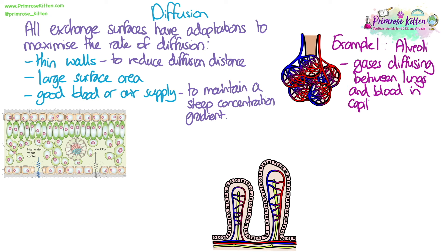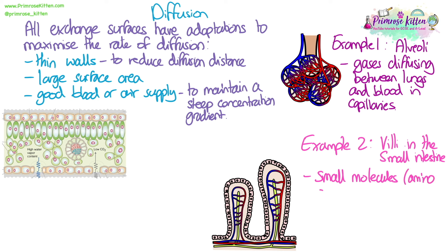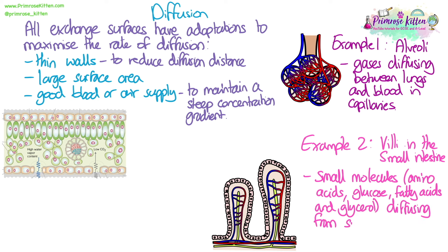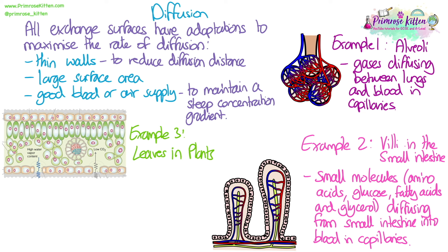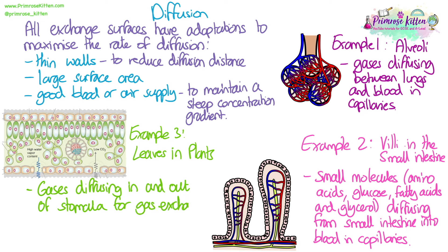There are three specific exchange surface examples we need to explain: the alveoli in the lungs, where gases diffuse between the lungs and blood capillaries; the villi in the small intestine, where small molecules — amino acids, glucose, fatty acids, and glycerol, the products of digestion — diffuse from the small intestine into the blood and capillaries; and leaves in plants, where gases diffuse in and out of stomata and into the spongy mesophyll tissue, where they are exchanged with cells carrying out respiration and photosynthesis.